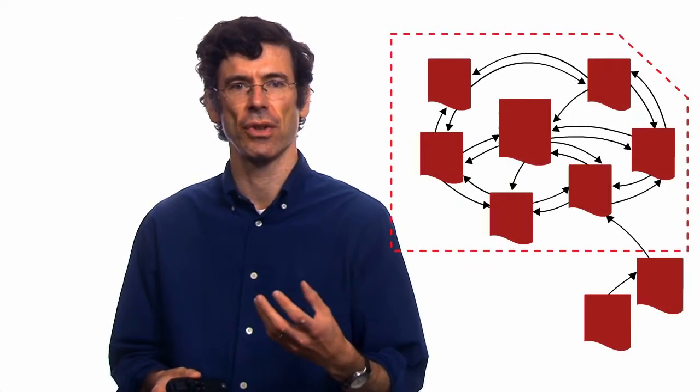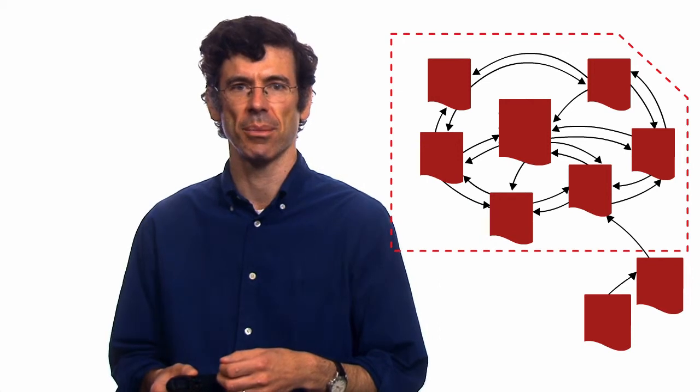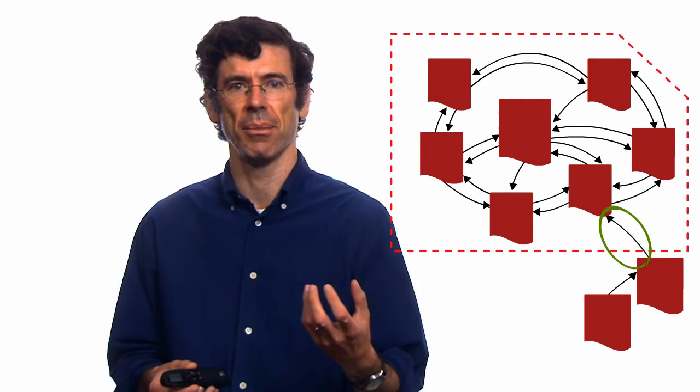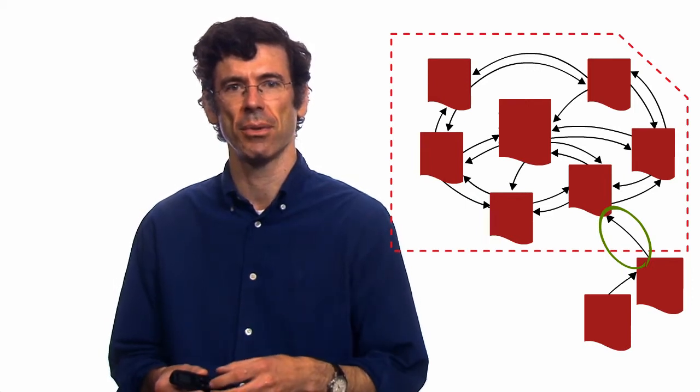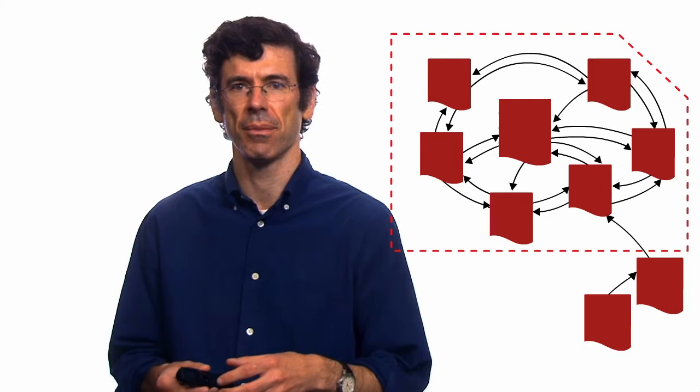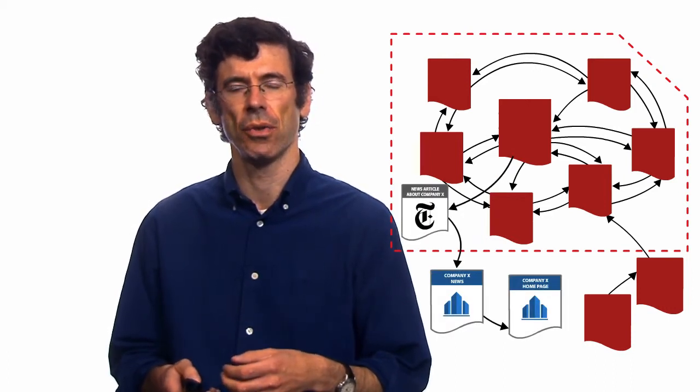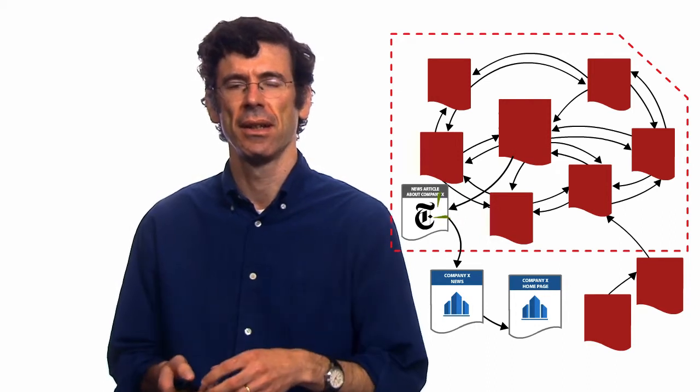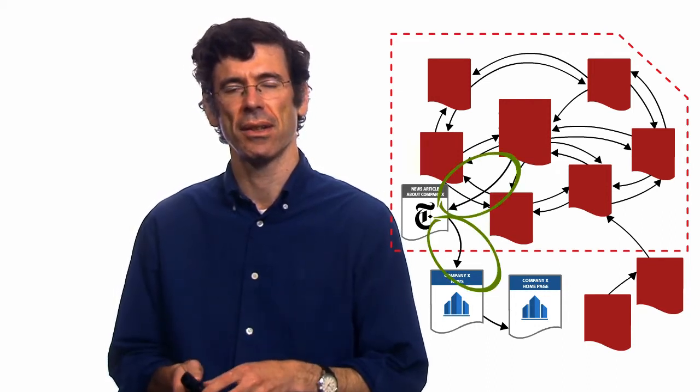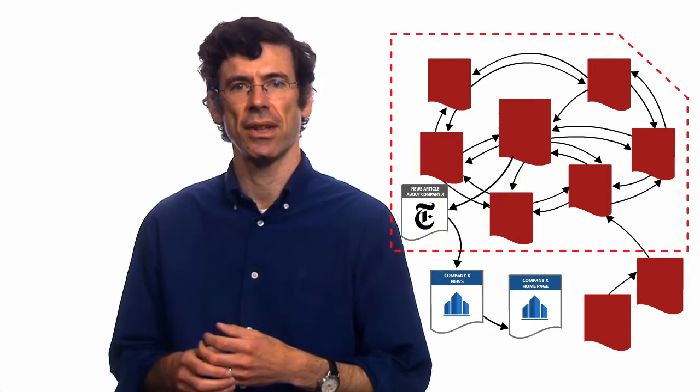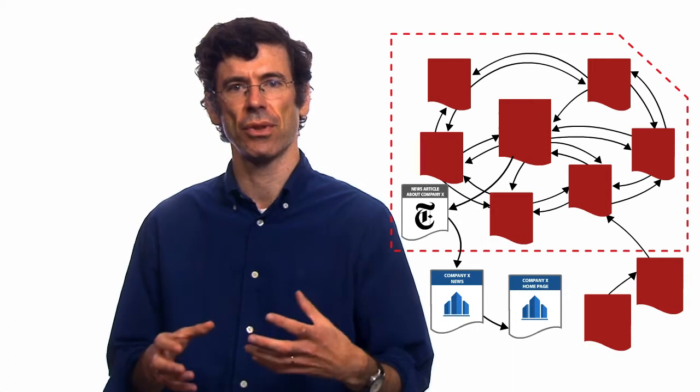For example, at the top we have a cluster of pages that were just created recently. They link outward into the giant strongly connected component, so they are upstream of it. You can get from them into the giant strongly connected component, but you can't get back to them. Similarly, companies that are linked from a New York Times article or Wikipedia page, but once you're on their site you can't get off, they're downstream of the giant strongly connected component. You can get to them, but you can't swim back upstream into the giant set. This, in the end, becomes our way of conceptually organizing the web.